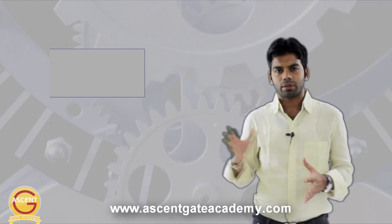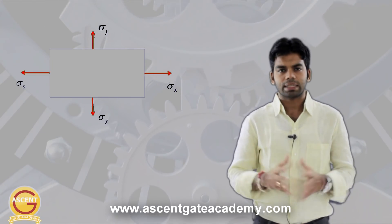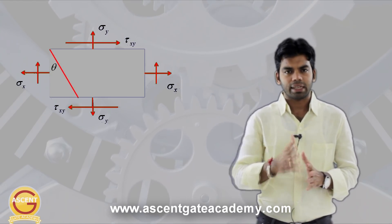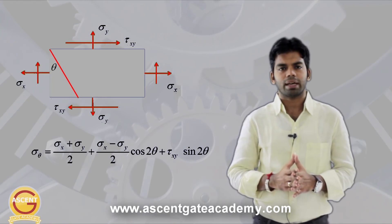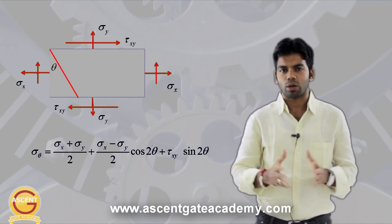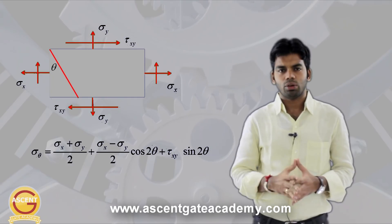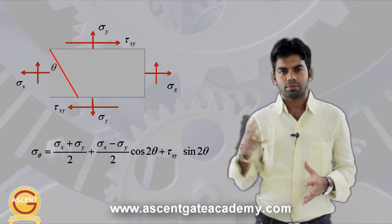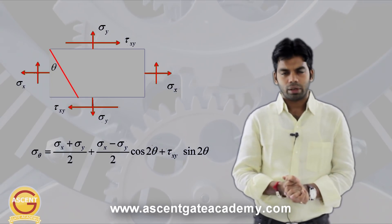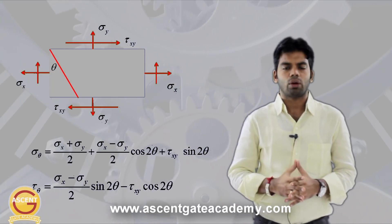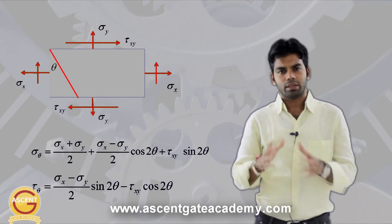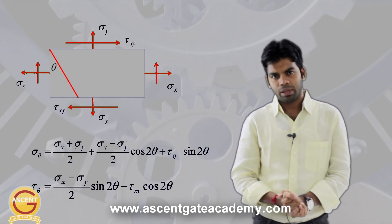By formula, if we have a component subjected to sigma_x in the x direction, sigma_y in the y direction, and tau_xy, then at a plane at any angle theta, sigma_theta equals (sigma_x + sigma_y)/2 + (sigma_x - sigma_y)/2 * cos2θ + tau_xy * sin2θ. Similarly, tau_theta equals (sigma_x - sigma_y)/2 * sin2θ - tau_xy * cos2θ. You substitute all values to get the answers.